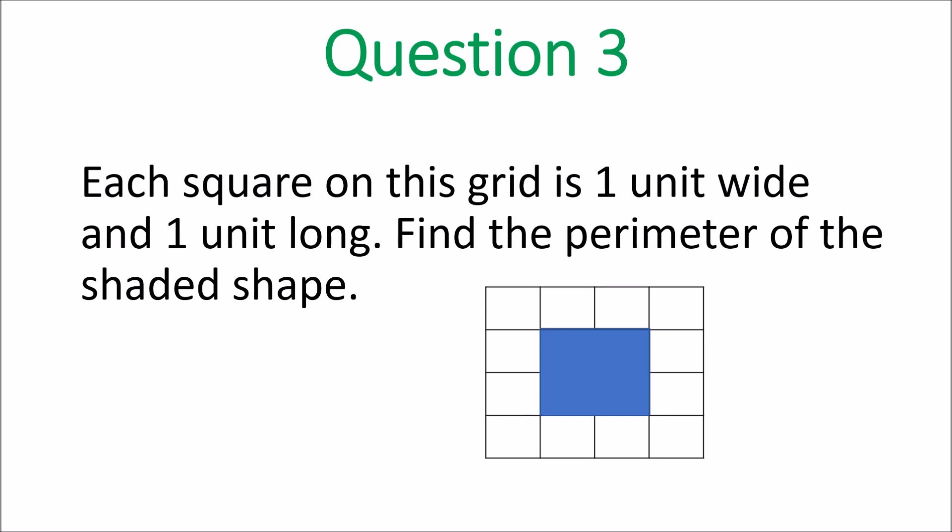Again here, perimeter is a word they may not be able to call. If they raise their hand and ask, you must call it for them. Each square on this grid is 1 unit wide and 1 unit long. Find the perimeter of the shaded shape.